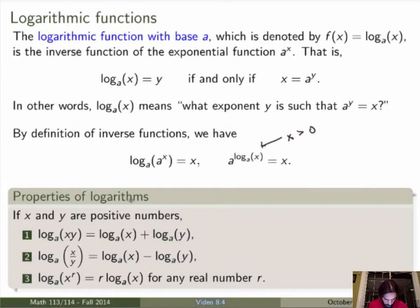So logarithms also satisfy a bunch of properties. I wrote three of them here. So the log of a product is the sum of the logs, log of a quotient is the difference of the logs, and log of x to the r is the same as r times log of x. To prove those, these are just the inverse statement of the properties for exponential functions.